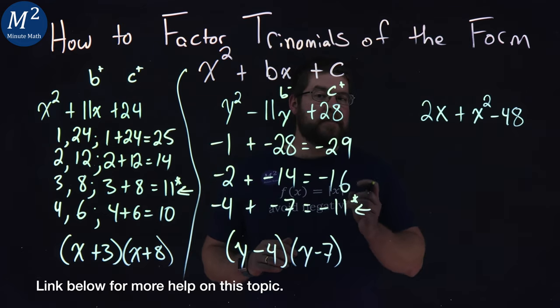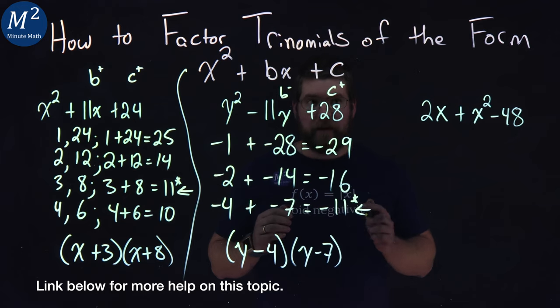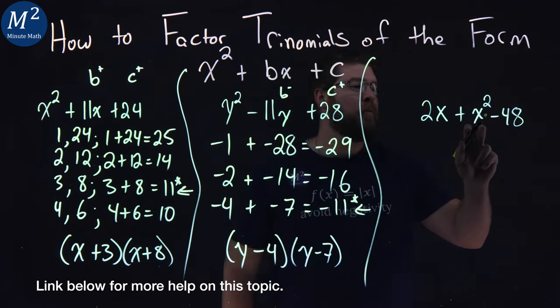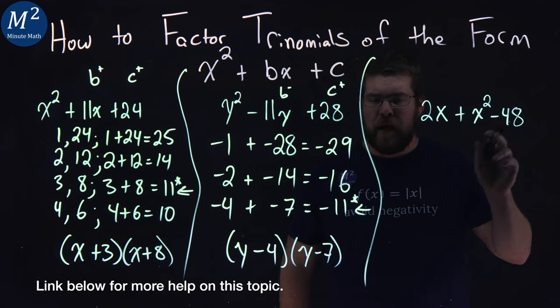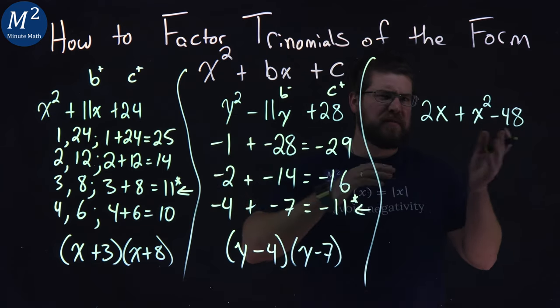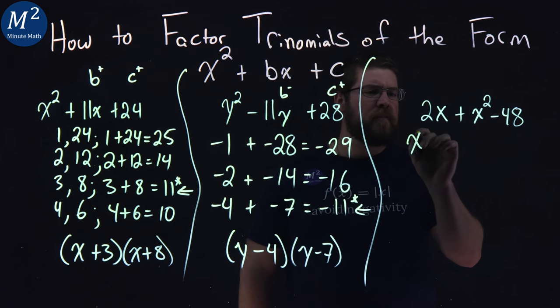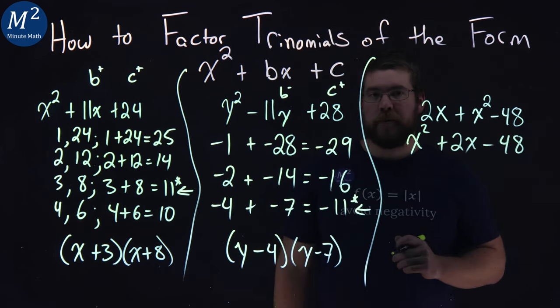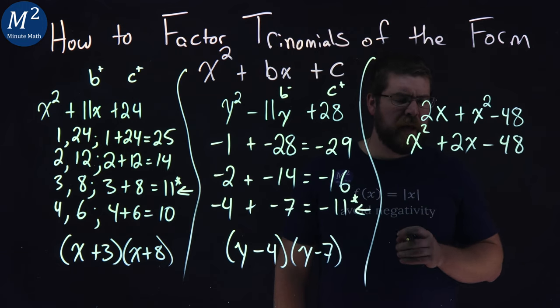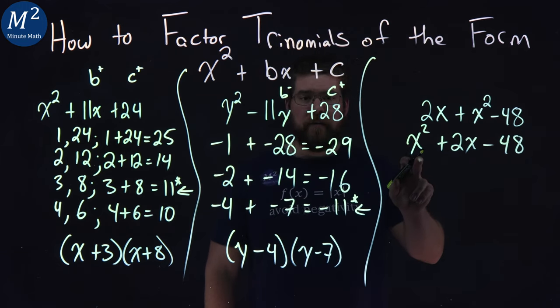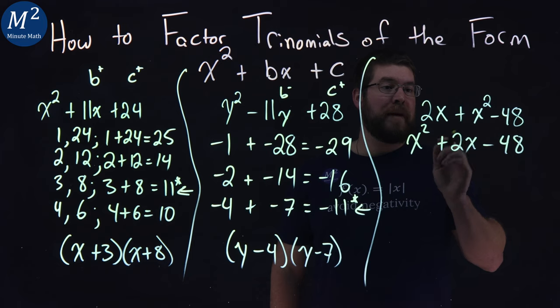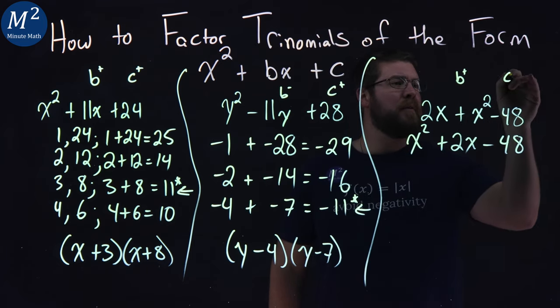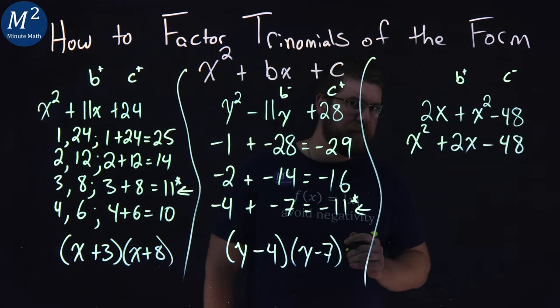All right, so let's go dive into our last example here. We have 2x plus x squared minus 48. Now notice this isn't in the right order that we want, so let's go order this around. x squared plus 2x minus 48. That's a lot better. Now notice again, a value is 1, but our b value is 2, and it's positive. So we have a positive b value, but our c value is negative.